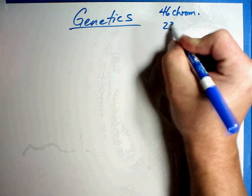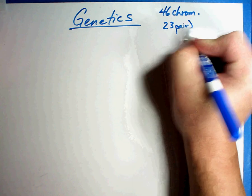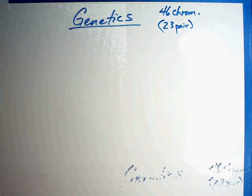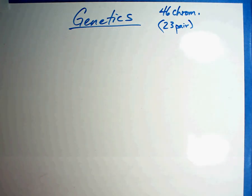We have 23 pairs that come into each cell. Half of your genes come from your mom, half come from your dad. So 23 and 23 gives 46. We're going to talk about how that works in this lesson.